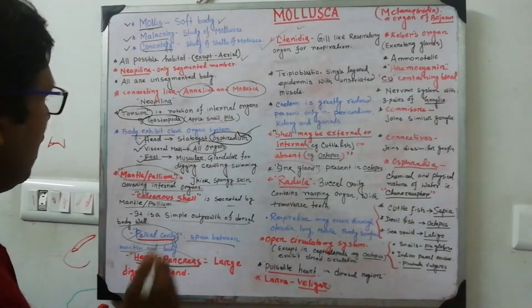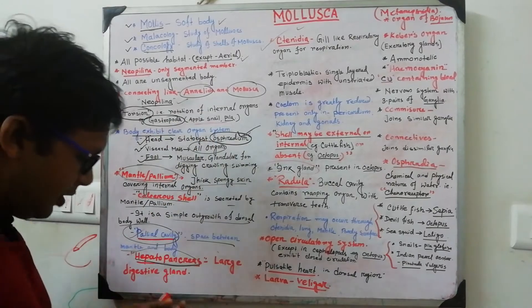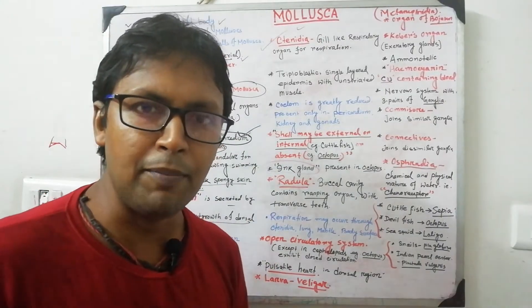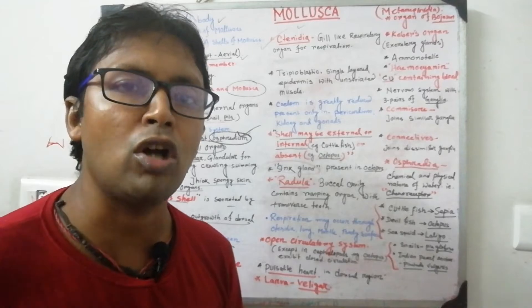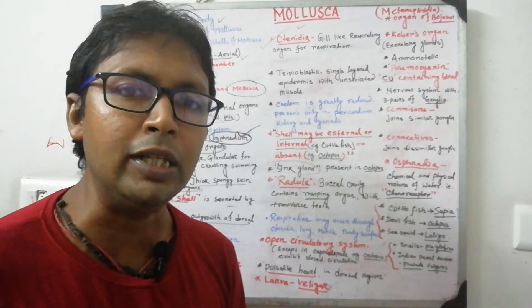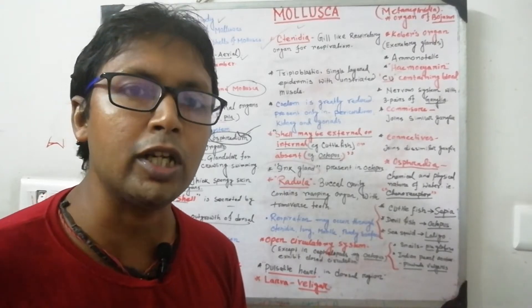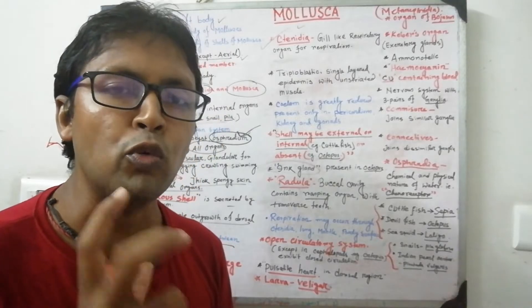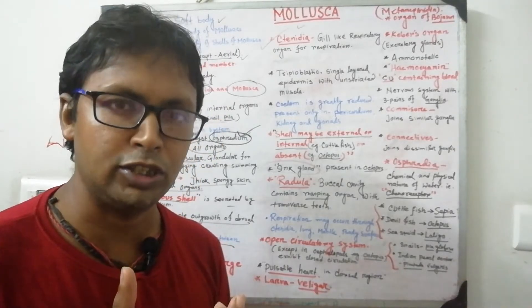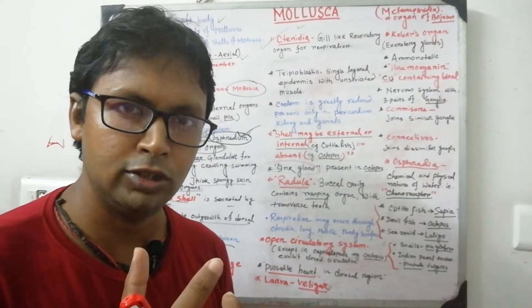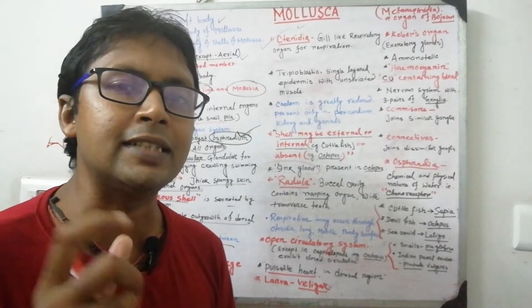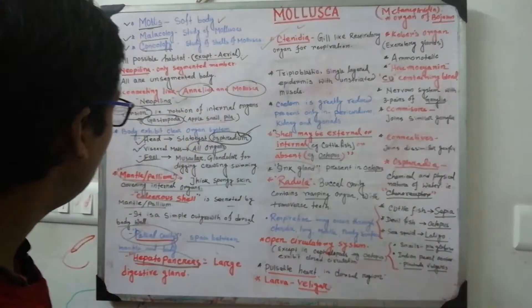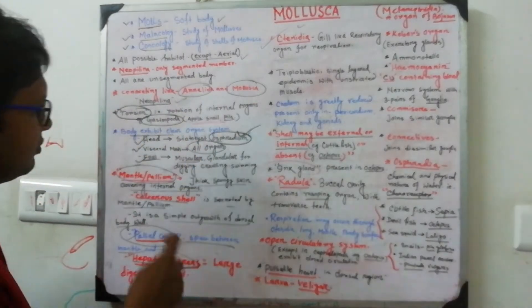Neopilina is an important genus here. Another important trait of this phylum is torsion — the twisting of body organs. Torsion is a maternally inherited trait and is very significant in mollusc biology.